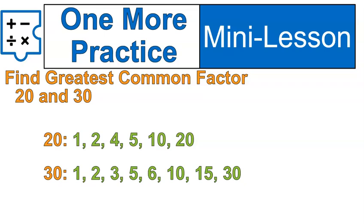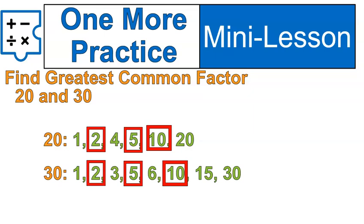The common factors include 2, 5, and 10. The greatest common factor or largest number in both lists is 10. 10 is our greatest common factor or GCF.